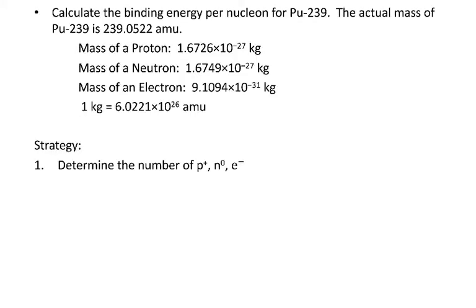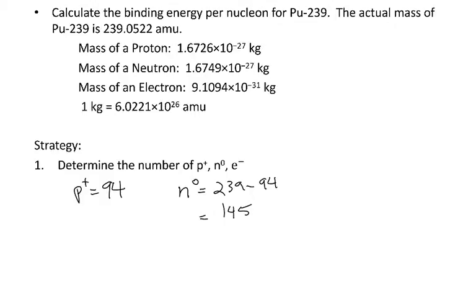The first thing we need to do is figure out how many protons, neutrons, and electrons there are in plutonium-239. For protons, we go to a periodic table and see that the atomic number for plutonium is 94, which always tells us the number of protons. For neutrons, we take the mass number and subtract the number of protons, giving us 145 neutrons. Since we're dealing with a neutral atom, the number of electrons equals the number of protons, so we have 94 electrons.